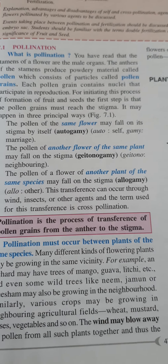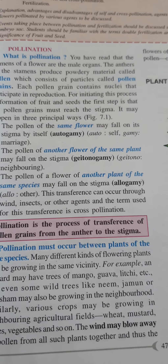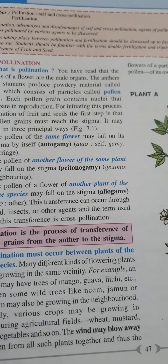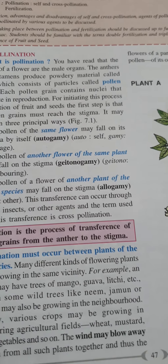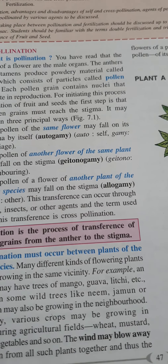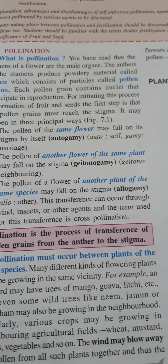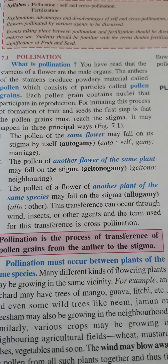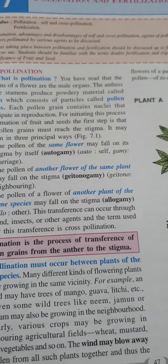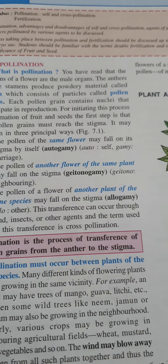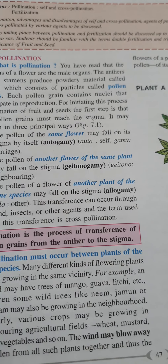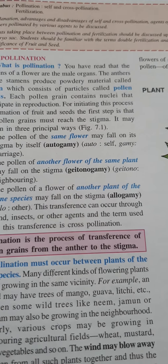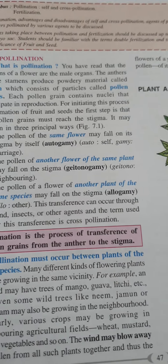Pollen grains ko receive karne ke liye. Doosri condition: the position and distance between anther and stigma — both should be close enough for pollination. Douno ke beech distance bahut kam honi chahiye. The exposed reproductive parts give a chance of cross-pollination. Kabhi kabhi anther stigma environment mein khule roop se nahi nazar aate, lekin wahan par transfer of pollen grains hota hai.